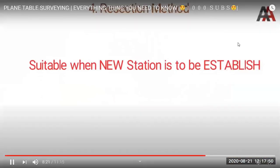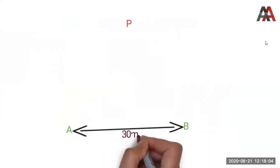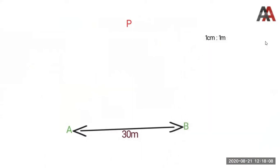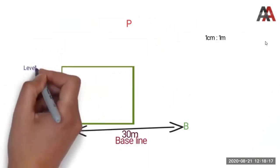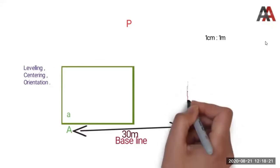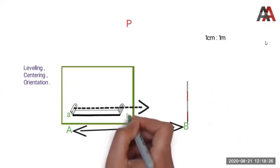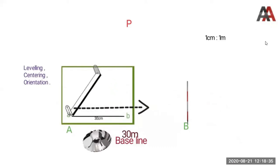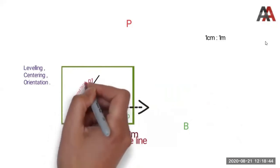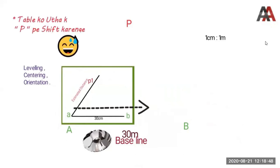The fourth and last method is the resection method, suitable when we have to establish a new station point. Suppose we have to locate a required station P. We first plot two known points A and B on the ground, measure the distance AB, use a suitable scale — for example, one centimeter equals one meter — and draw line AB as the baseline. We set up the table on station A, level, center, and orient by bisecting the ranging rod at B. After clamping the table, we touch point A on the paper, sight the ranging rod at P, and draw a ray, marking an estimated point P1 along that ray.